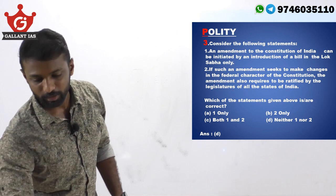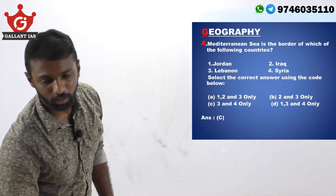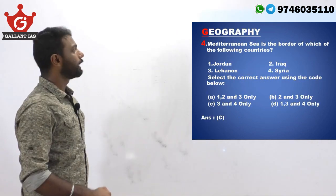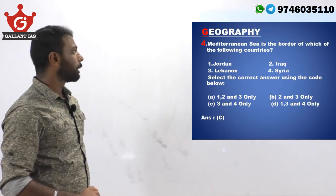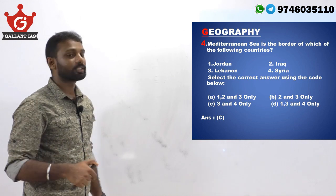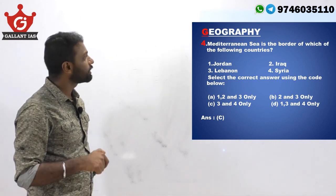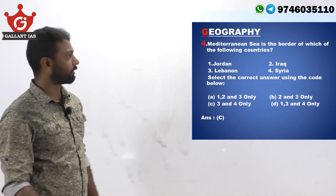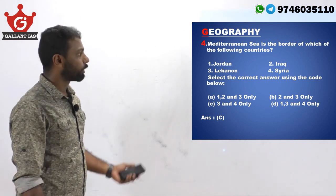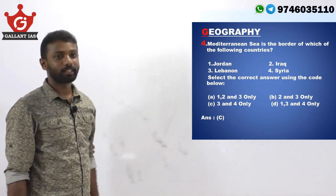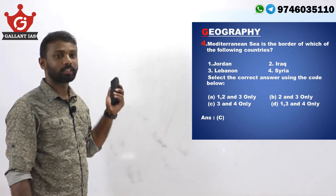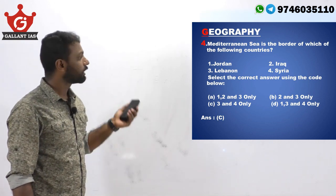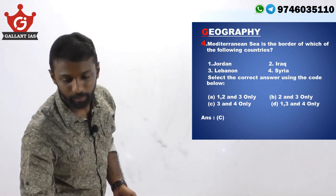Moving on to the next question on geography — it is a map-based question. Mediterranean Sea is the border of which of the following countries? One, Jordan. Two, Iraq. Three, Lebanon. Four, Syria.